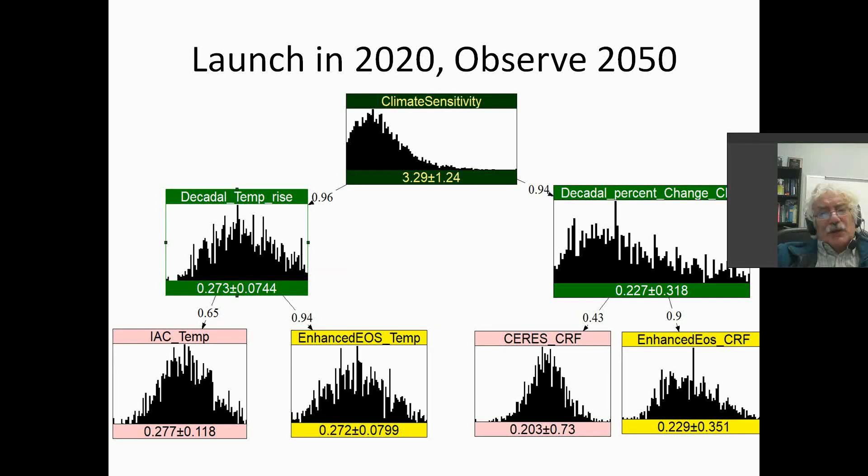If we could observe these proxy variables without instrument error, we would be in pretty good shape. However, down here, we see the relationship between the enhanced and the current systems for these proxy variables. The pink systems, the current systems, have a rather low correlation with the proxy variables, meaning that the instrument error is still quite significant. That is not reduced so much by longer observing times.